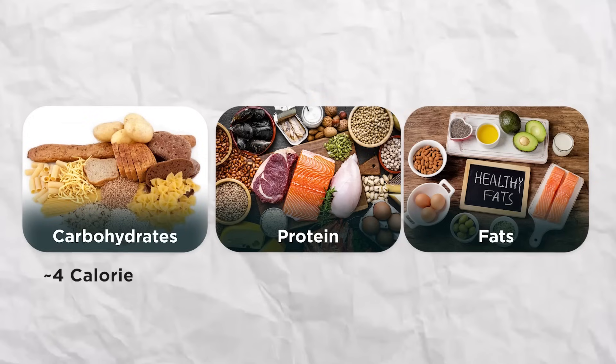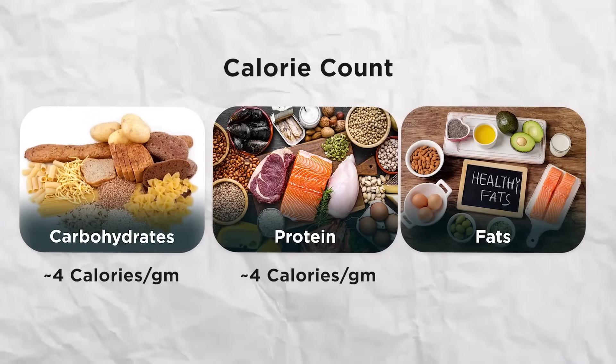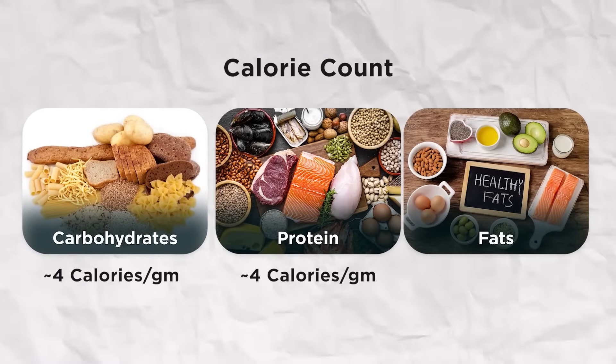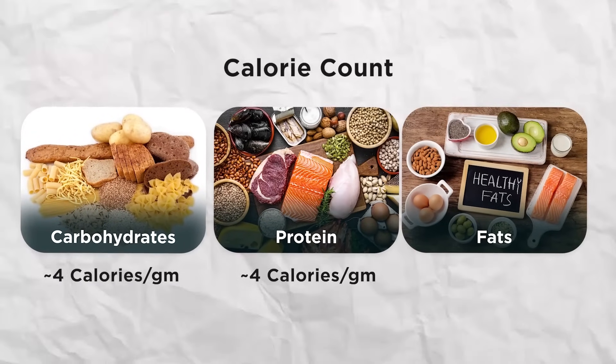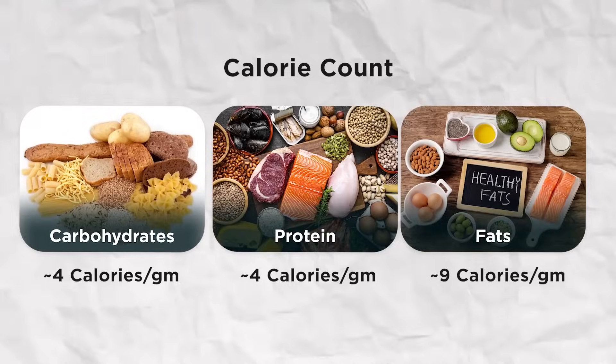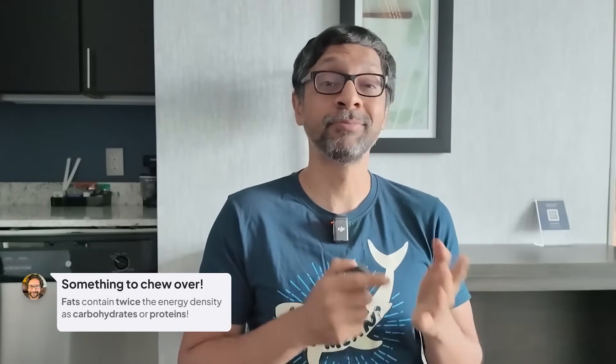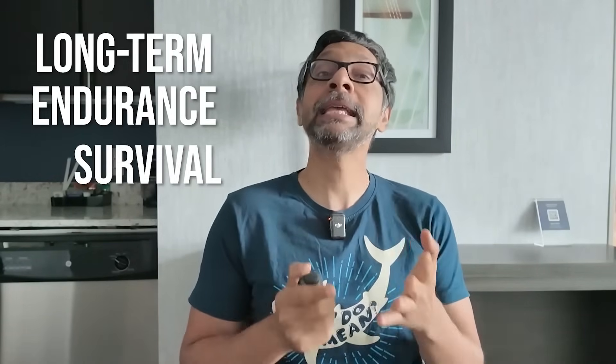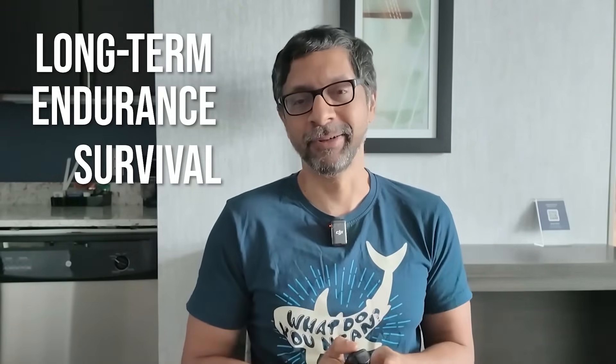Fat stands out as the energy storage champion. Carbohydrates and proteins have four calories per gram, while fat packs nine calories per gram — more than twice the energy density of carbs or proteins. This makes fat the ideal fuel for long-term endurance and survival in the animal kingdom.